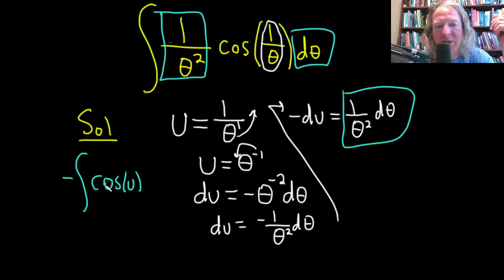Right? Because u is this piece here, right? This is u. And then here we have du.